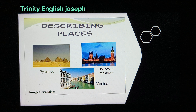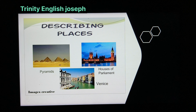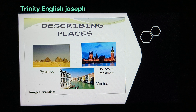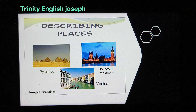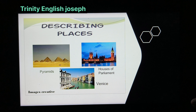Friends, we would look at the describing of places. You can look at various places here — you can observe like pyramids, Houses of Parliament, Venice, or whatever it may be, maybe my house. There are various things in this way. Different kinds of places, whatever you see around — everything can be described.